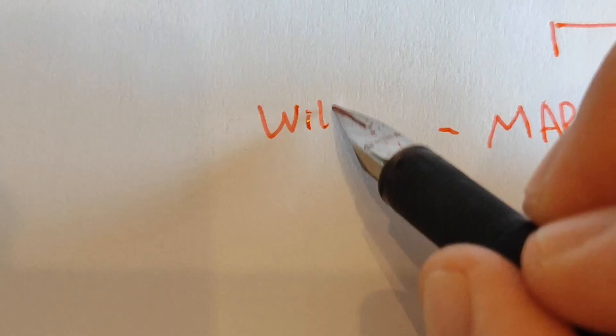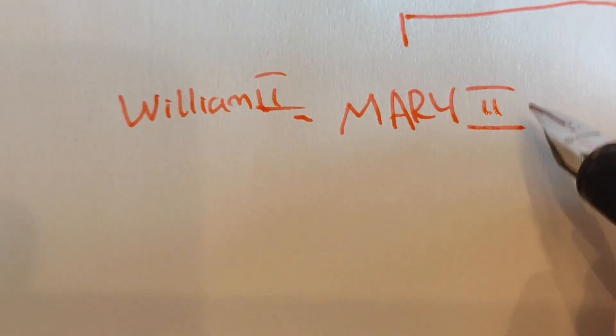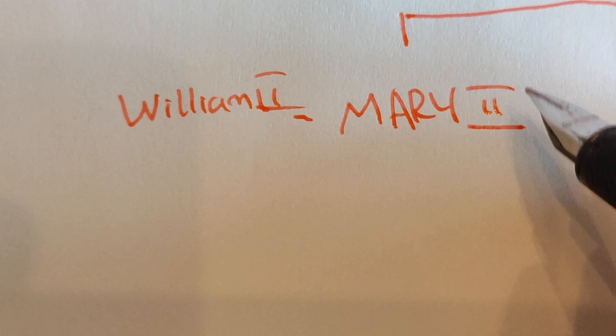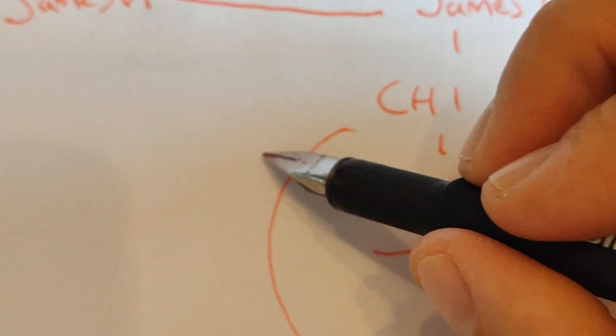This is where we get two sovereigns on the throne, known as a diarchy, not a monarchy. The only time that this has ever happened on the throne of England. Mary II and William II were cousins, of course, because Charles I had a daughter called Mary, who was William's mother.